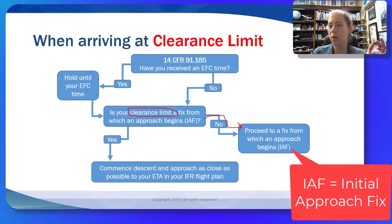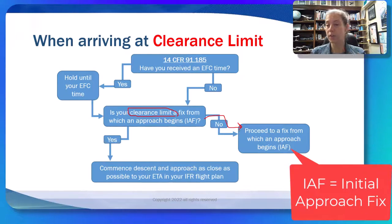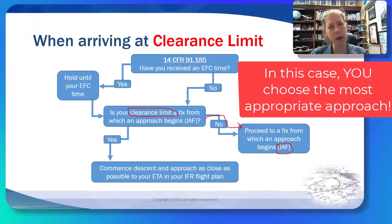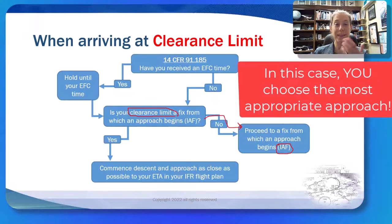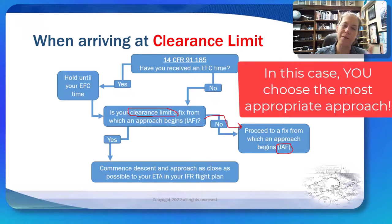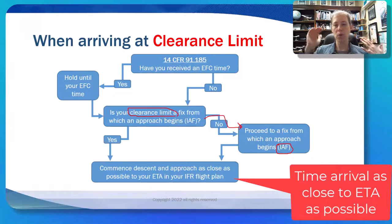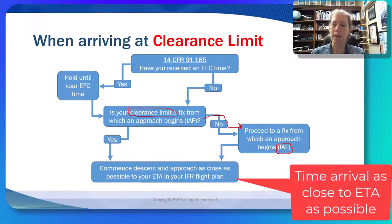Choose an initial approach fix that makes sense — hopefully you got a weather briefing, so you have some idea of the wind. Pick an approach that will align you with the runway, because you really want to be able to land rather than execute a missed approach. Then proceed to that fix and begin your descent and approach as close as possible to your estimated time of arrival from your instrument flight plan.